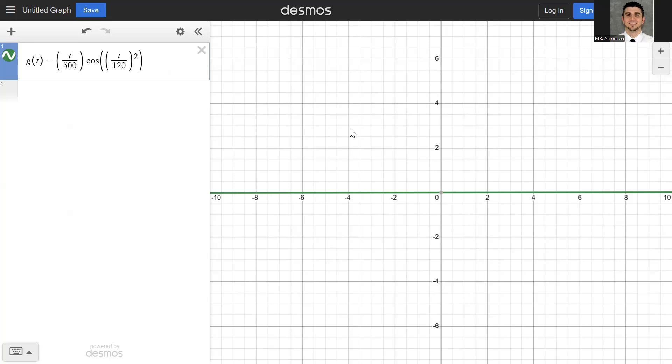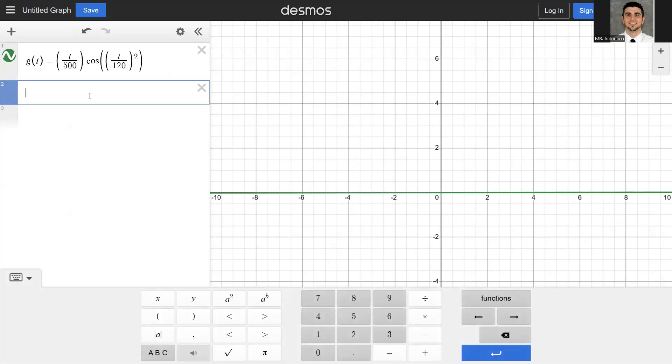All right, so we're in Desmos now, and I've already entered the function into Desmos. Now, here's how you're going to do this. You type 'int' for the integral symbol, and then you can put the lower limit, the upper limit. And since you already have g(t) defined for Desmos, you can type g(t) in there, dt, and it's going to give you the value of the definite integral. But remember, this asks for the average value, so we can go back here, type in 1 over 150 minus 0. So much faster. Now you have your answer here.